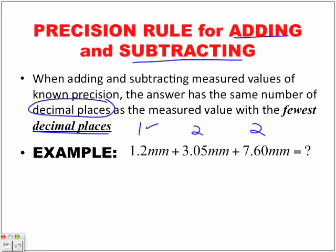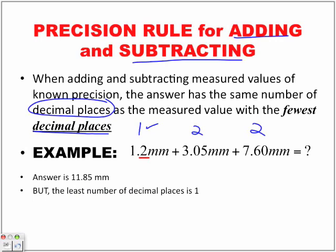That means our answer is going to have only one decimal place. The answer here is 11.85 millimeters if I add that up. But the least number of decimal places is one, so we need this .8. Before we say the answer is 11.8, we need to look at the number we're ignoring — that five — and because it's five or greater, 11.8 gets rounded up to 11.9 millimeters.